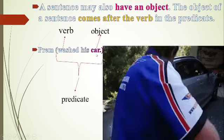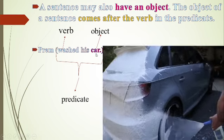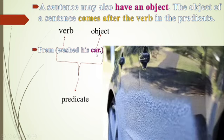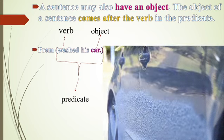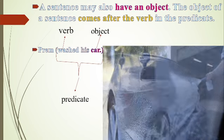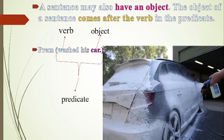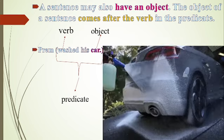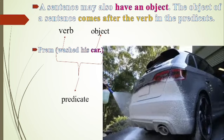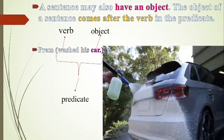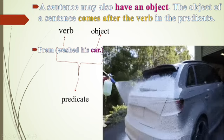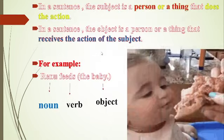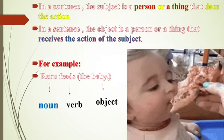So we have to understand that the predicate starts from the helping verb or main verb and ends at the last word of the sentence.